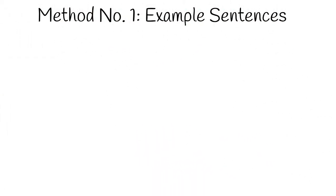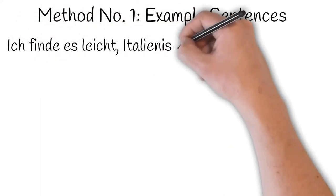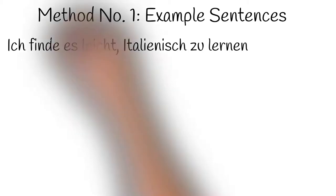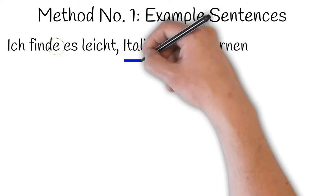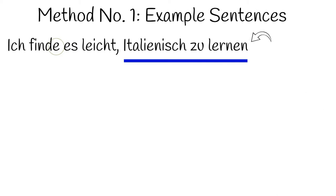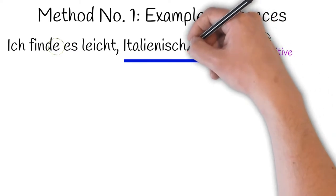In order to apply this, let's look at some example sentences. Firstly, ich finde es leicht italienisch zu lernen. Notice that the first half of the sentence includes the verb finden, but in its conjugated form. It's matched with the correct ending according to ich, who's in charge of the verb. But the second half of the sentence is a zu clause containing an unconjugated infinitive, lernen, preceded by the word zu.